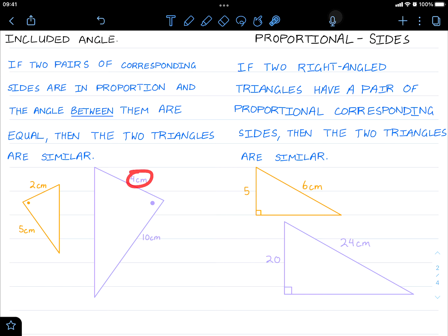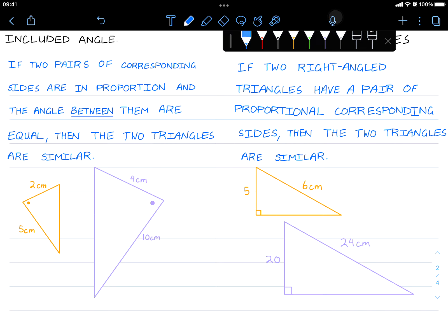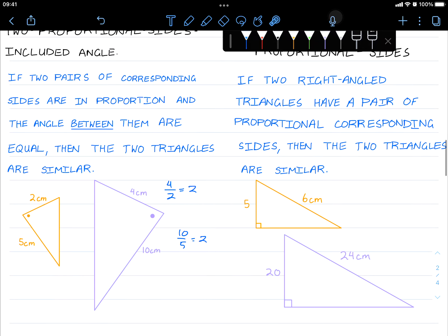So we have corresponding sides. For example, if we did 4 divided by 2, that's 2, and 10 over 5, that's also 2. So we have two pairs of proportional sides, and the angle in between is equal. Then these two triangles are similar.